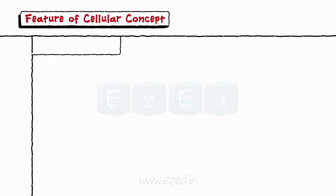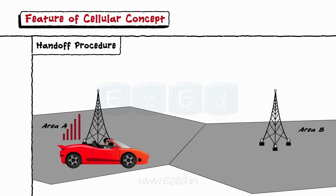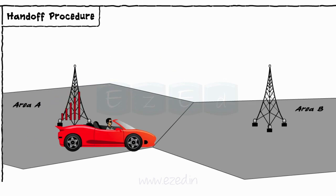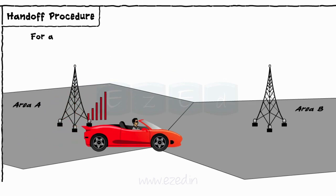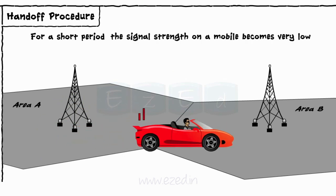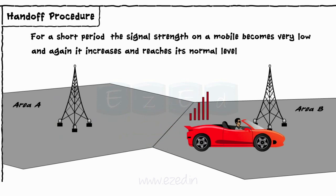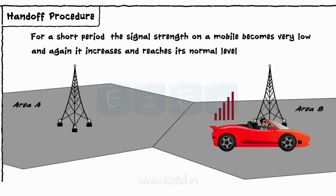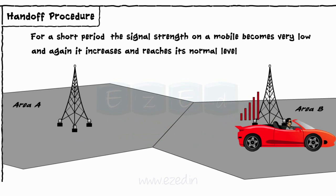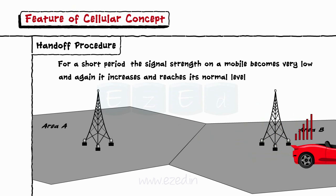Let's see what we mean by a hand-off procedure. Consider a situation where we are travelling from place A to place B via a car. Sometimes it happens that for a short period of 2 or 3 seconds, the signal strength on mobiles becomes very low, and again it increases and reaches its normal level. Have you ever thought why this happens? The answer to this question is the hand-off procedure.